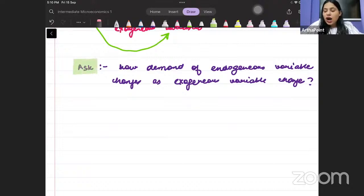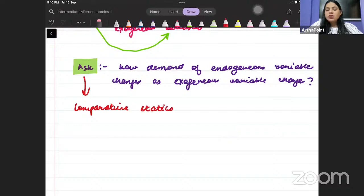Beta, this concept, when you ask this, this is known as comparative statics. We call this as comparative statics. Okay Beta? So what is comparative statics? Comparative statics is basically when we go ahead and we check how the exogenous variable affects the endogenous variable, that is called as comparative statics. Okay Beta?